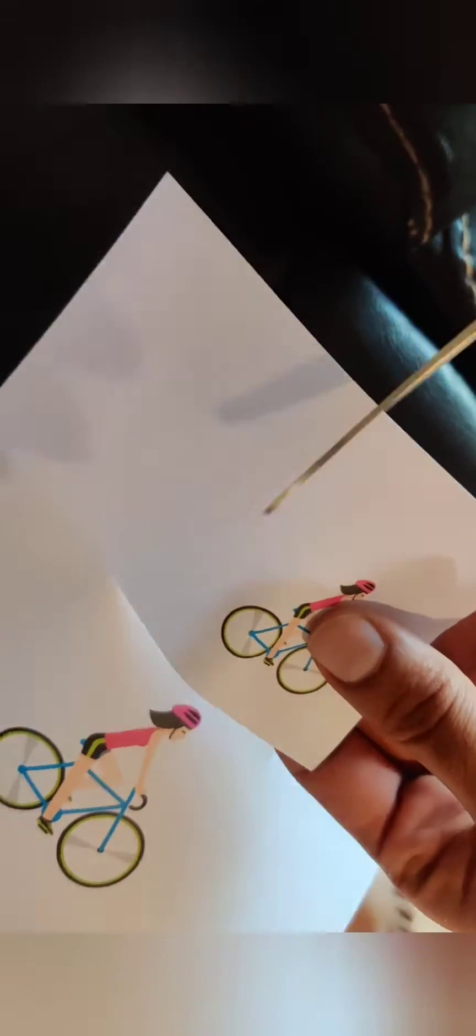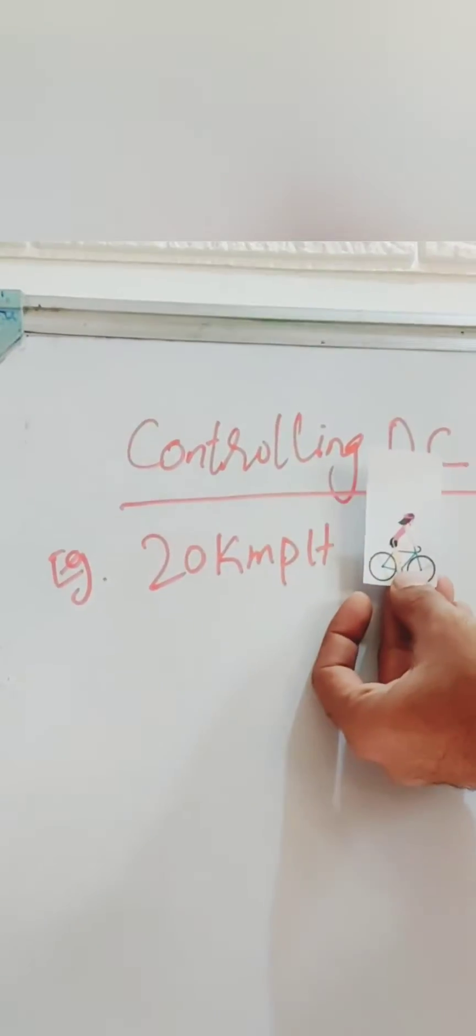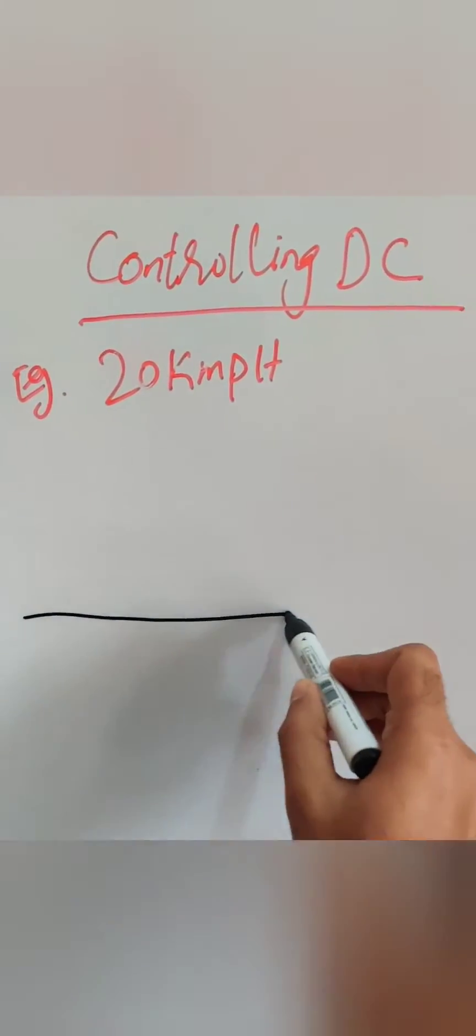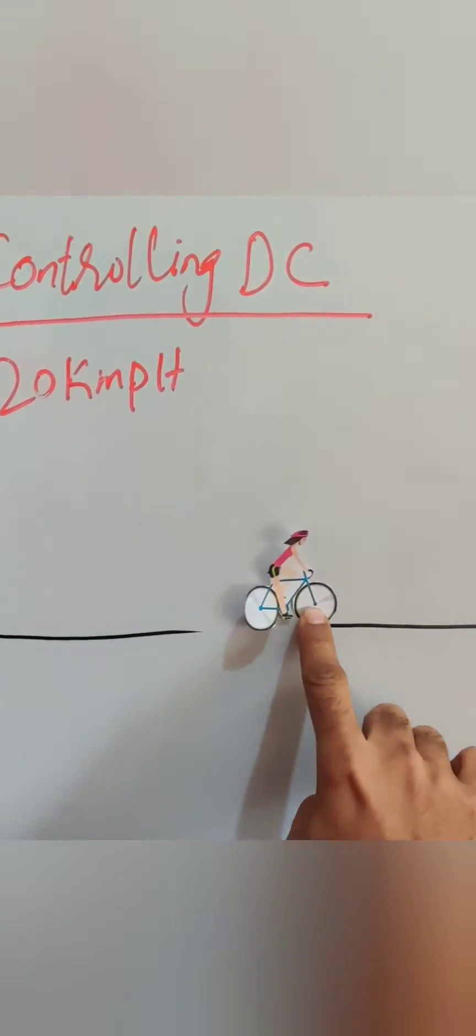So let's assume that you are riding a bicycle and the requirement is that you have to cycle at constant 20 km per hour. It's very simple that you have to pedal at constant speed so you hit 20 km per hour without any trouble.